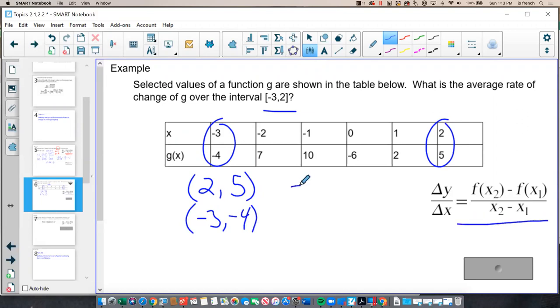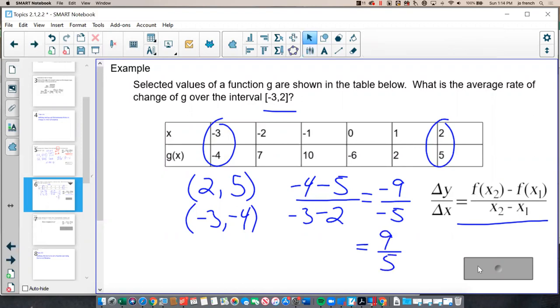So negative 4 minus 5 over negative 3 minus 2, which gives me negative 9 over negative 5, which simplifies to a positive 9 fifths. My average rate of change is 9 fifths.